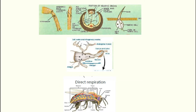Next is direct respiration. In humans, oxygen enters through the nose and travels indirectly, but in insects oxygen enters directly through spiracles and travels through the trachea and tracheal trunks to reach each cell directly. When not in use, the spiracles close via a valve mechanism, so no water loss occurs from the body.